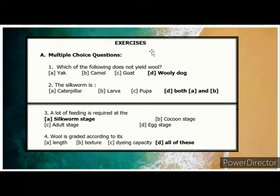Which of the following doesn't agree? Woolly Dog, The Silkworm — Answer: Both A and B. Caterpillar Larva. A lot of feeding is referred at the Silkworm stage. Wool is graded according to — Answer: All of these — Length, Texture, Dyeing Capacity.